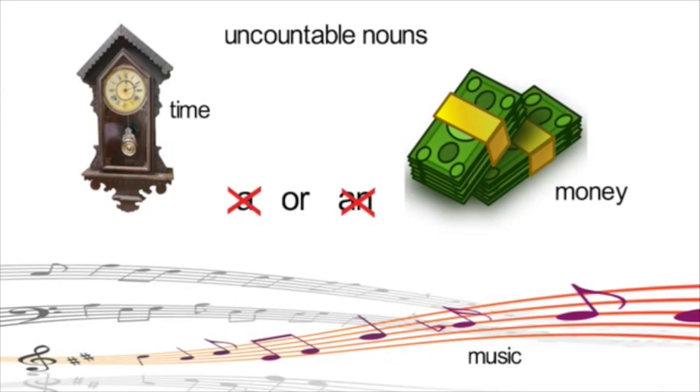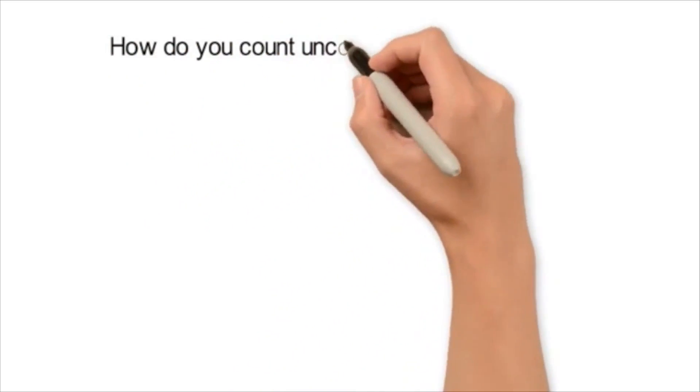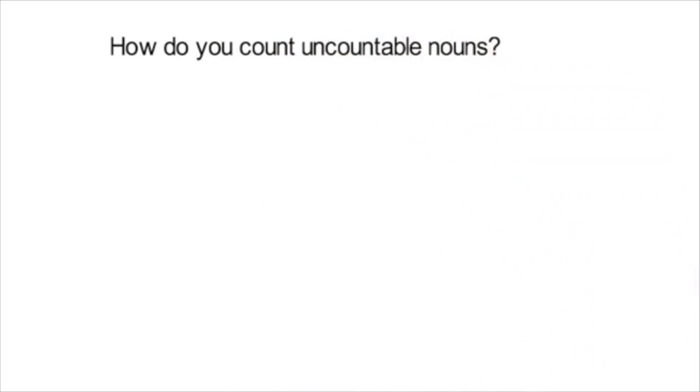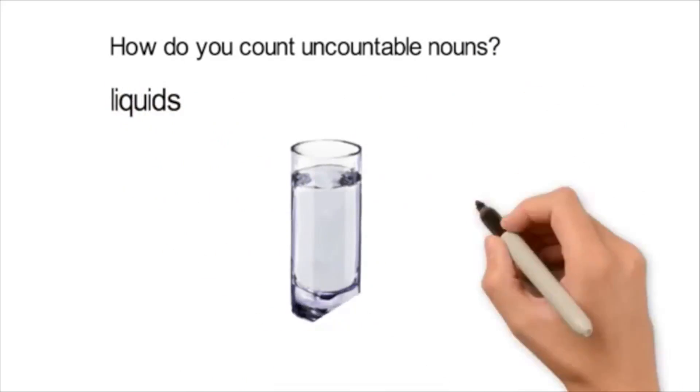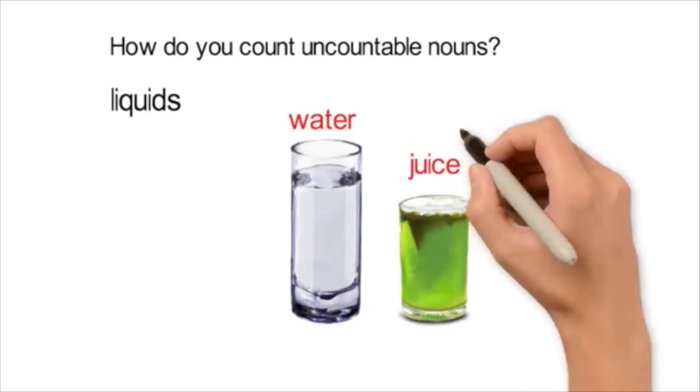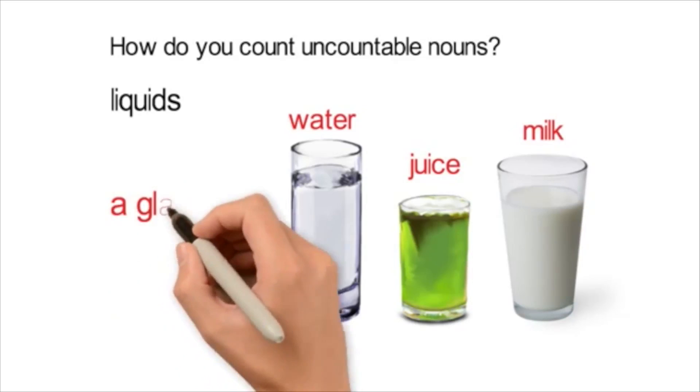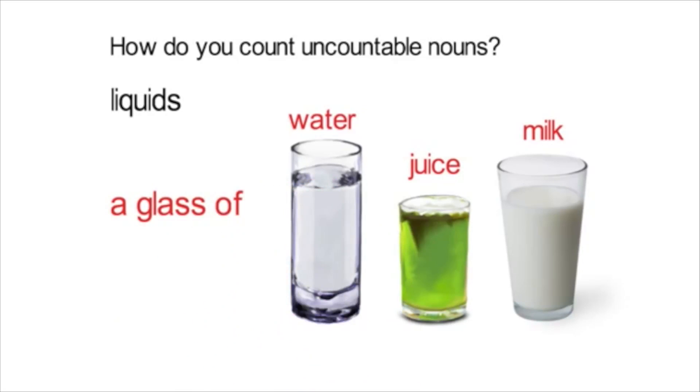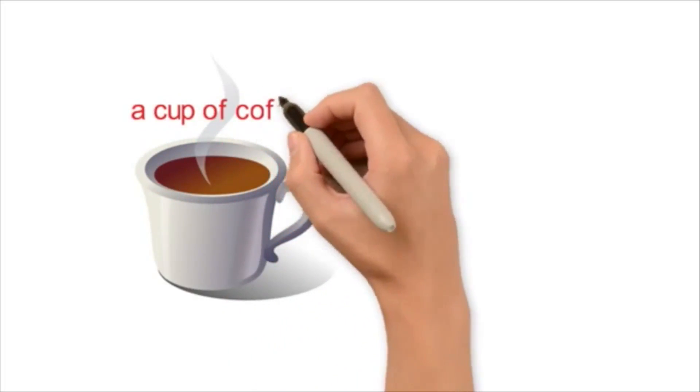However, it is possible to count some uncountable nouns, but you will need to add a quantifier. So, if you want to count liquids, such as water, juice or milk, you would say, can I have a glass of water or can I have a glass of juice? You could also say, I want a cup of coffee or a cup of tea.